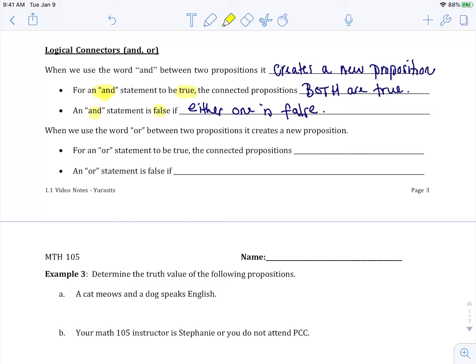Then we have an OR connector. If we put it between two propositions, it also creates a new proposition. For an OR statement to be true, just either one has to be true. An OR statement to be false, both are false.